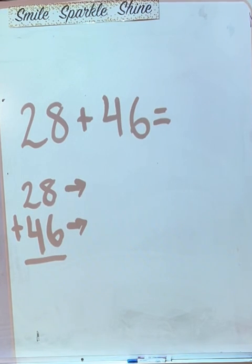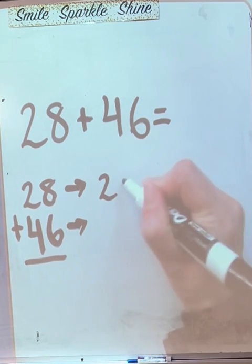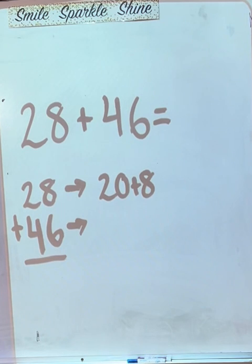So how do we write the expanded form of 28? 20 plus 8. And the expanded form of 46? 40 plus 6.